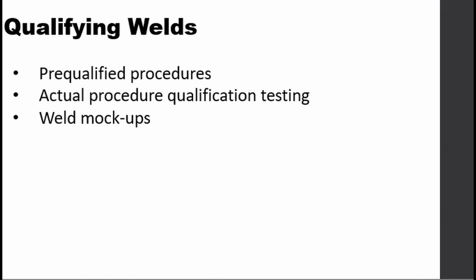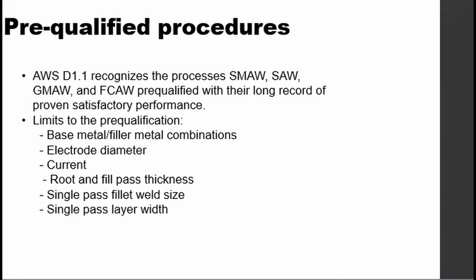These are the three methods to qualify a weld: pre-qualified procedures, actual procedure qualification testing, and weld mockups. AWS D1.1 specifies typical welding processes like SMAW, GMAW, and FCAW. If the weld falls under one of these processes and does not exceed the parameter limits of the qualification, then depending upon the code, the WPS can be used without a PQR — meaning the WPS is already pre-qualified.